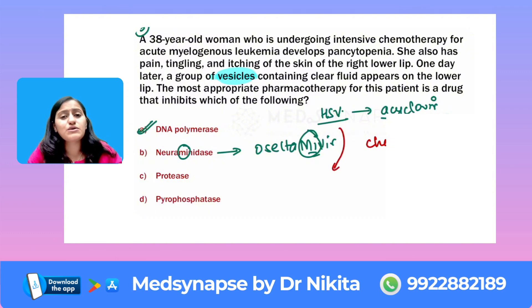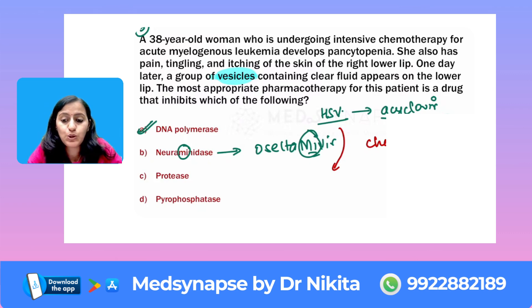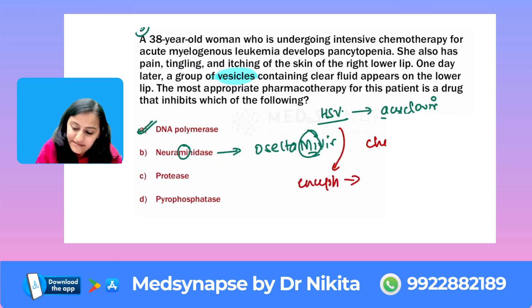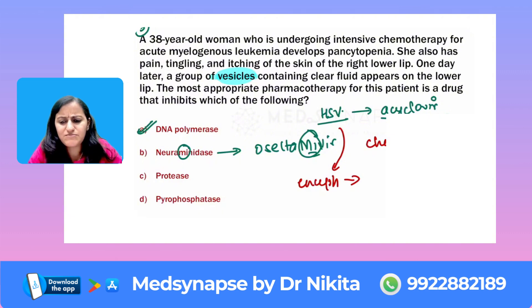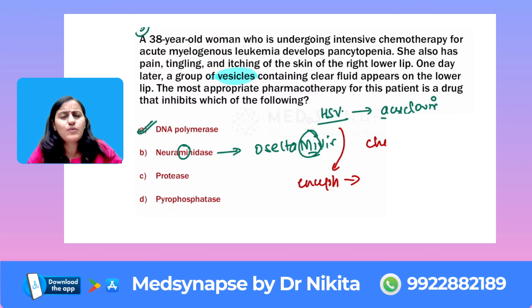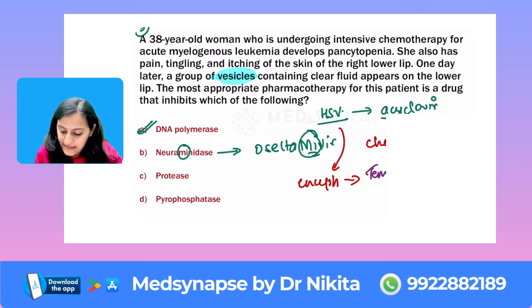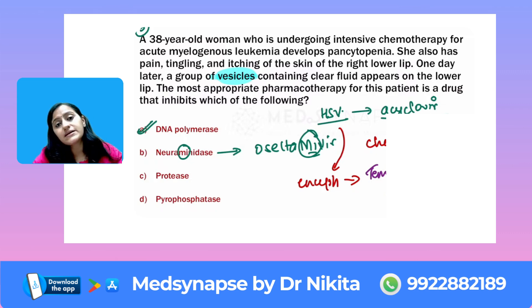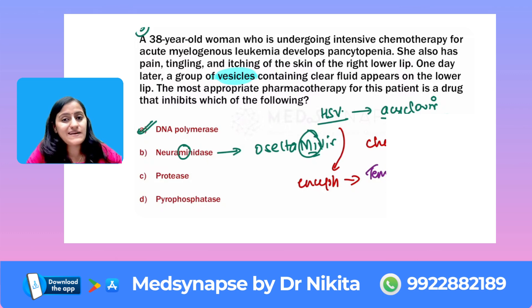Another very frequently asked point you should never forget: HSV encephalitis predominantly affects which lobe? When HSV causes encephalitis, it predominantly affects the temporal lobe — that is the key word. This has been asked in recent NEET PG and FMG exams. Do not confuse HLA-B5701, which is for abacavir — an HIV drug — with acyclovir. CSF PCR is what you do for diagnosis of HSV encephalitis, and this has been asked in one of the recent NEET PG exams.